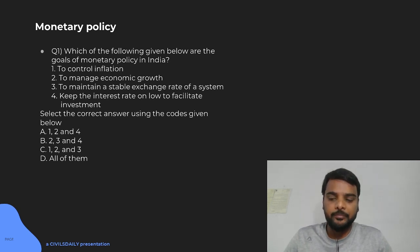But there are other targets also like control inflation to manage economic growth, to maintain a stable exchange rate system. The main aim of the Monetary Policy is to control inflation, keep it around 4 plus minus 2. And also inflation and investment is decided by its Monetary Policy, that is the interest rate that will give impetus to the economic growth. So, 2 will also be true.